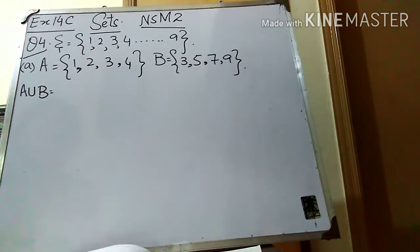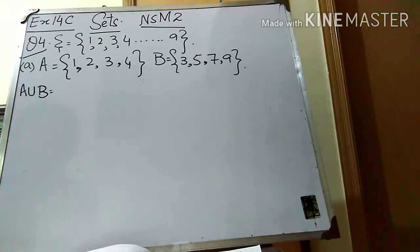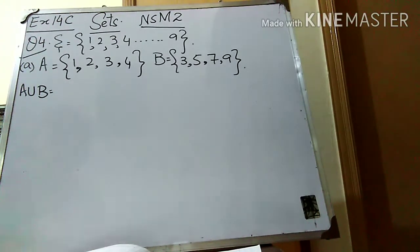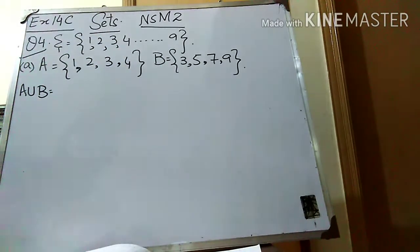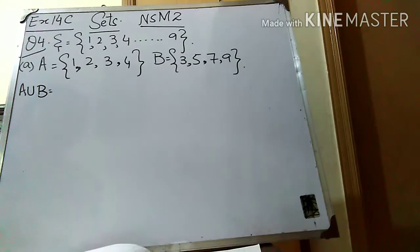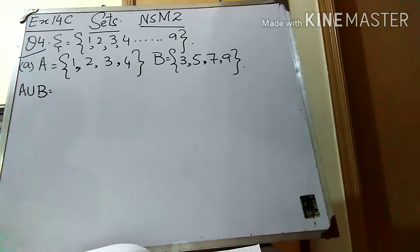Assalamu alaikum students, how are you all? I hope that you all are doing great. Welcome to your channel Maths D1D2 Scientific Academy. Today our lecture is related to chapter 14, and the name of the chapter is Sets, and the book is New Slabers Mathematics 2. I am going to explain question number 4, which is basically to show A union B through a Venn diagram.